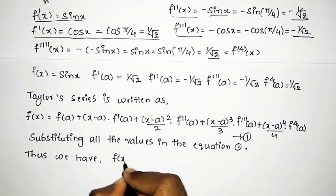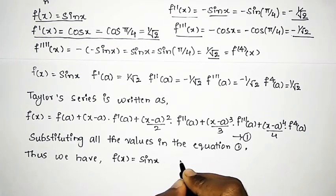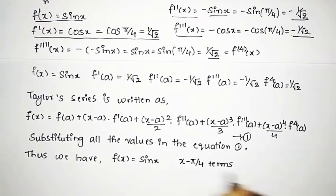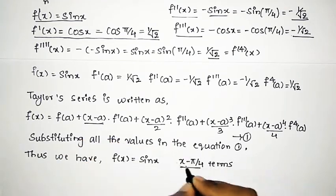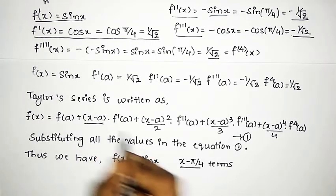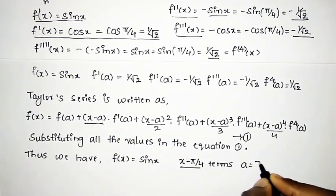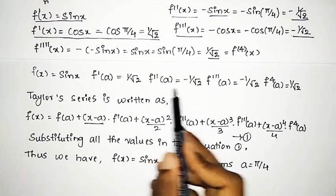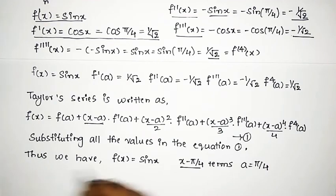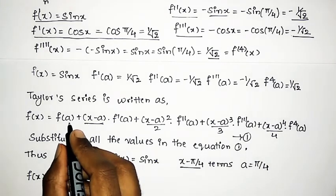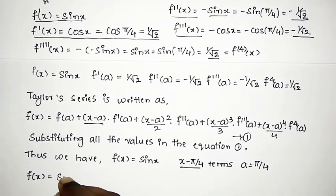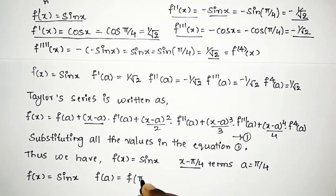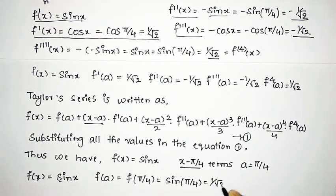The function f(x) = sin(x) is given, expanded in powers of (x - π/4). By observing the expansion, we identify a = π/4. Therefore f(a) = f(π/4) = sin(π/4) = 1/√2.